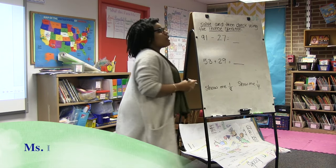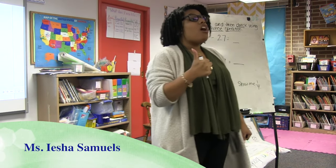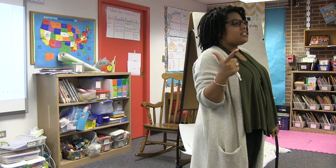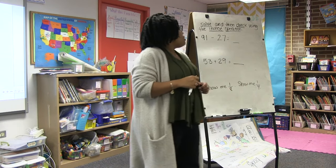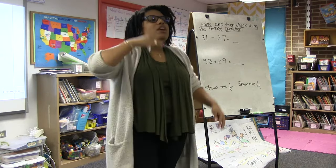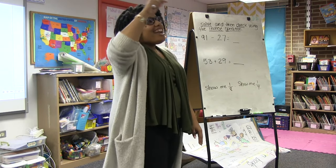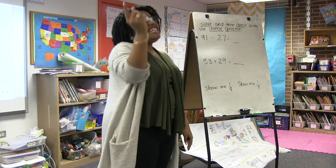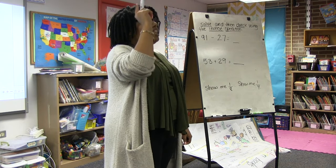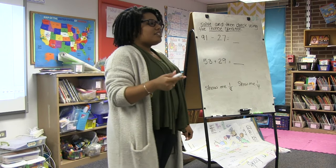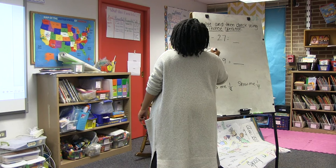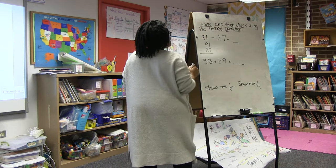Ms. Samuels asks students what they do first: solve the problem. Then second: use the inverse operation to check it. She prompts them to recall their little song about double-digit addition and subtraction. A student leads: 'Always start in the one place. Don't forget your sign. Now that's how you know what to do. If you're stuck, push through.' Ms. Samuels affirms the steps.